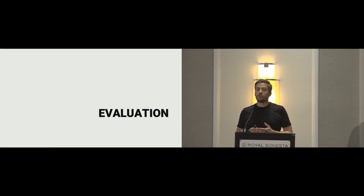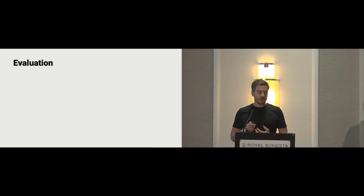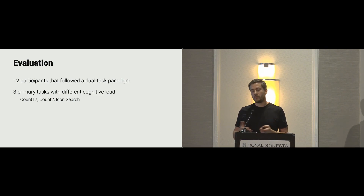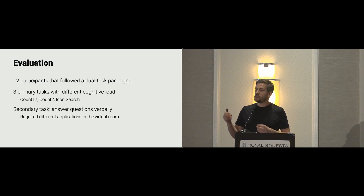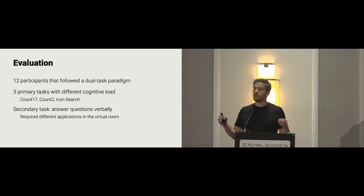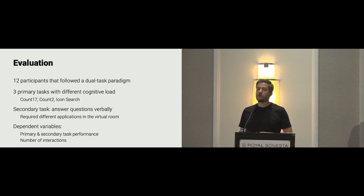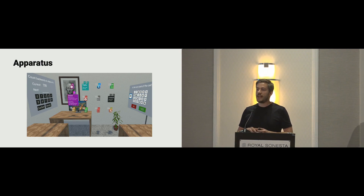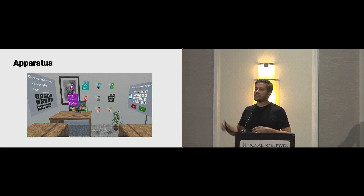We evaluated our approach to find out about usability and applicability. We had 12 users following a dual-task paradigm, completing three different primary tasks with different cognitive loads: counting backwards in steps of 17 (high cognitive load for most people), counting backwards in steps of two, and image search. As a secondary task, they were asked to answer questions verbally — the system used text-to-speech to ask questions, and users needed applications in a virtual room to answer them. We measured primary and secondary task performance as well as the number of interactions needed. We performed the study in VR because our physical setup introduces about 60 milliseconds of lag and some motion sickness, and VR also provides a larger field of view.